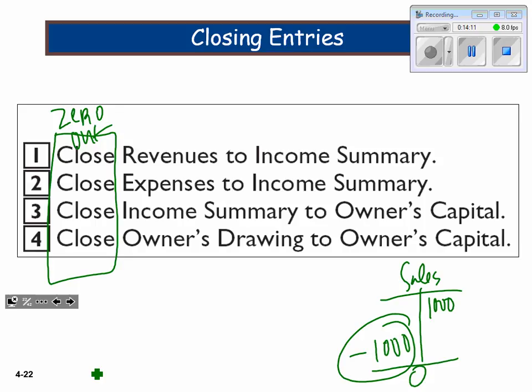Step three depends on net income or loss. If it's a net income, you're going to have a debit to income summary — so capital would be a credit. If it's a net loss, it's all flipped. Most often we'll have net incomes, but I still want to teach you the net loss scenario. For owner's drawing, this will be a credit to close drawing, and capital will be a debit.